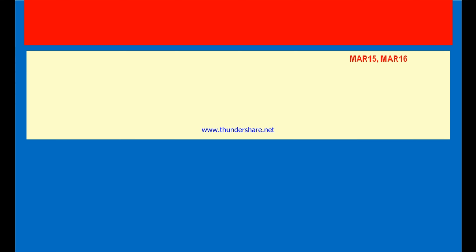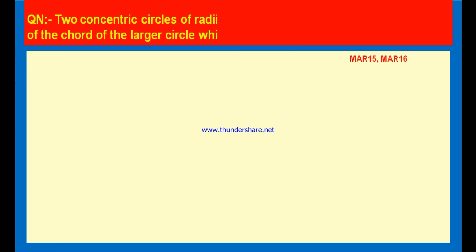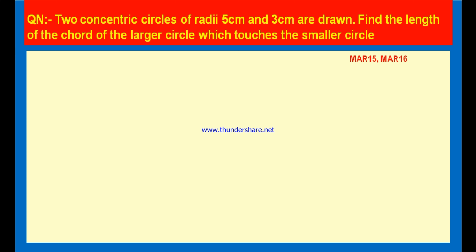Another question. Two concentric circles of radii 5 centimeters and 3 centimeters are drawn. Find the length of the chord of the larger circle which touches the smaller circle. This question is given in March 2015 and March 2016.